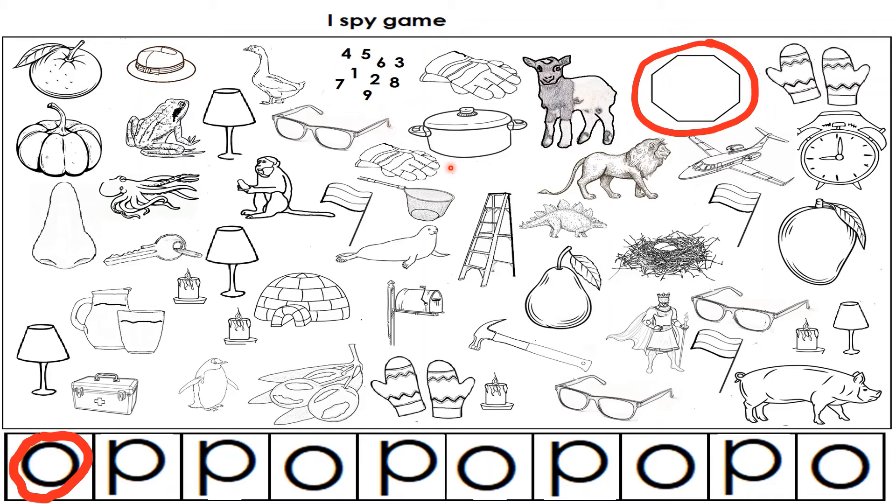Oh, pot. P, ot, pot. Pot. We are done with this P. We are going to circle this too.